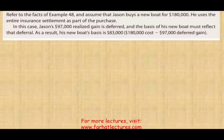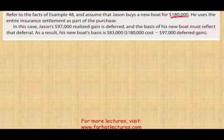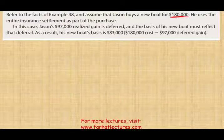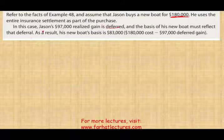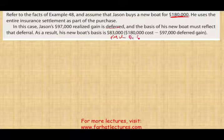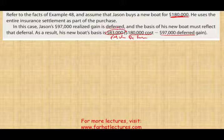Let's change the scenario. Assume Jason buys a new boat for $180,000, using his entire insurance settlement as part of the purchase — he paid $5,000 more than the insurance proceeds. In this case, Jason's $97,000 realized gain is fully deferred and the basis of the new boat must reflect that deferral. The basis equals the fair market value of the new asset, $180,000, minus the deferred gain of $97,000, which gives a basis of $83,000.